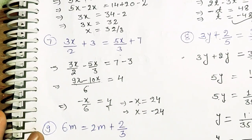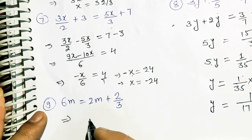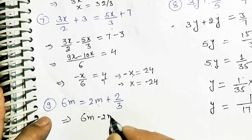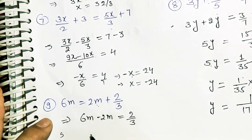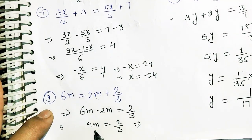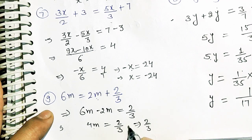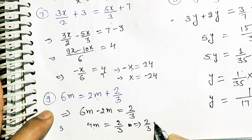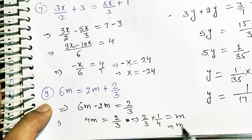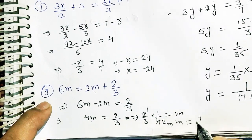Now the last part: 6m equals 2m plus 2 by 3. 2m is in plus on the RHS, it will move to the LHS as minus 2m. So 6m minus 2m gives 4m, equal to 2 by 3. Since 4 is in multiplication on the LHS, it moves to the RHS as division. So M equals 2 by 3 multiplied by 1 by 4, which gives M equal to 1 upon 6.